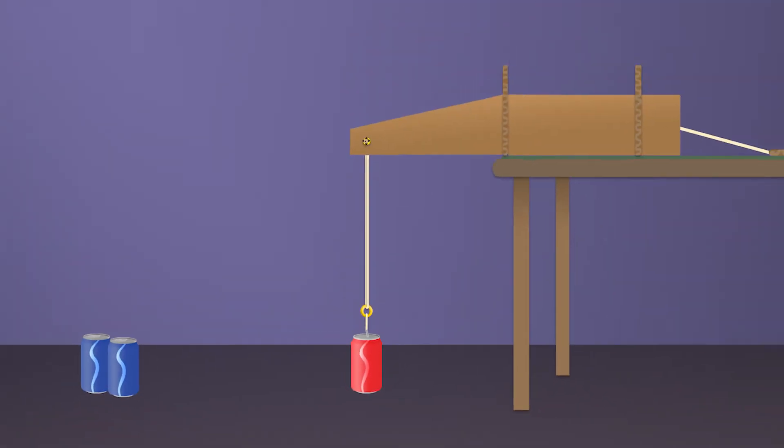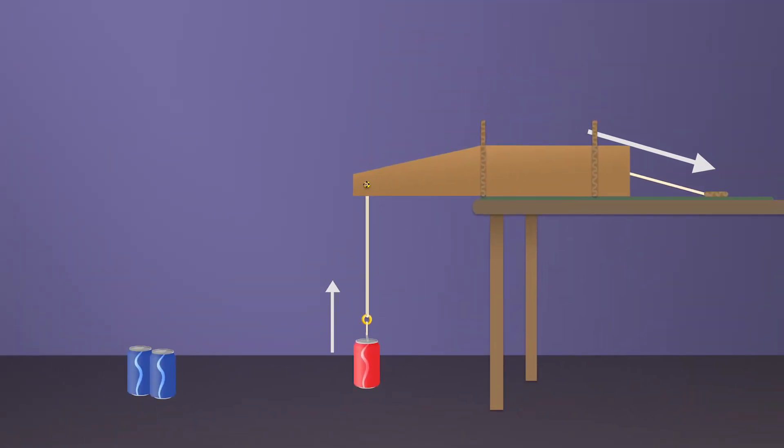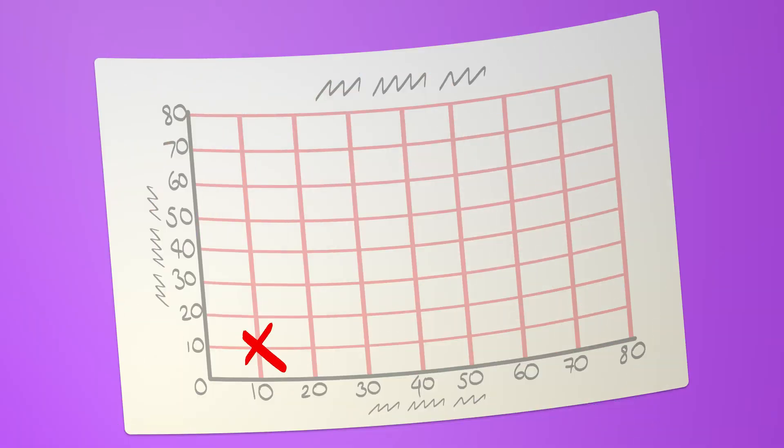Attach a small weight to your lower pulley. That is the load. Pull the string. How far did your load lift? How much string did you pull? You could even make a graph. How far did you pull the string on one axis and how far did the load move on the other? Try plotting different distances. What did you see?